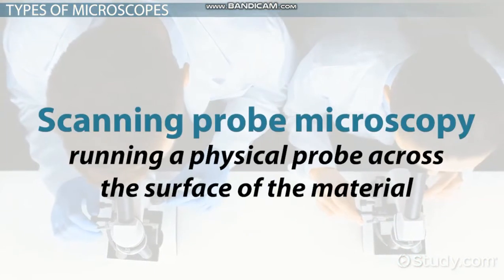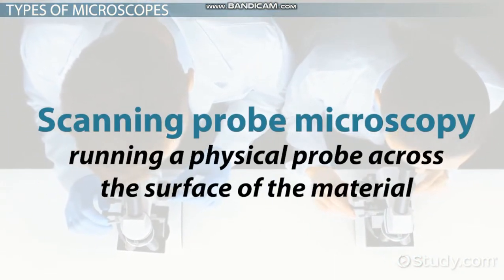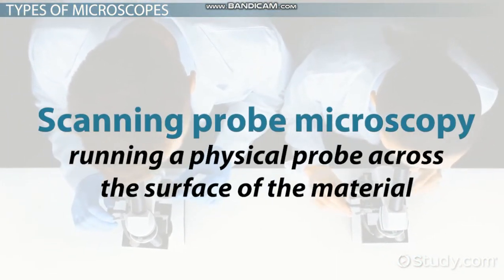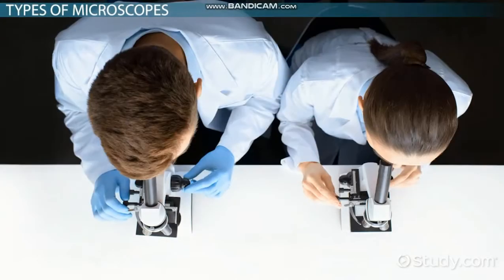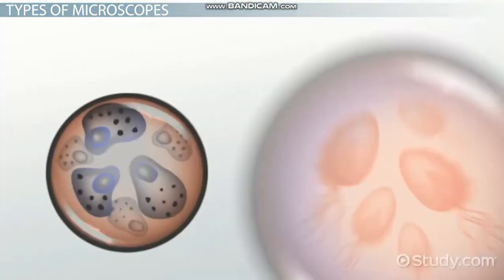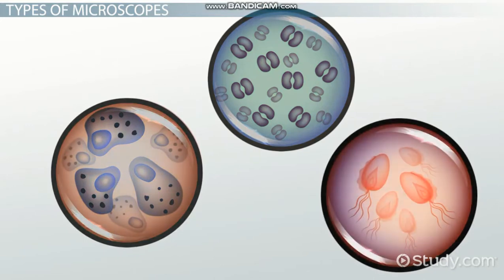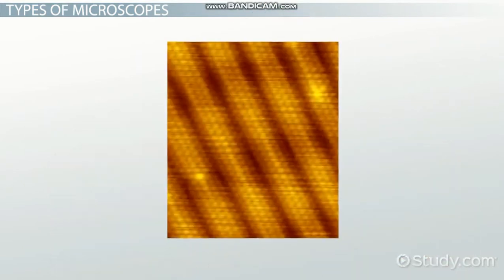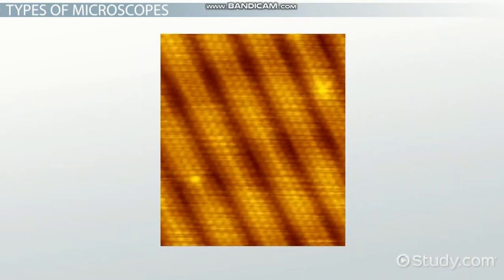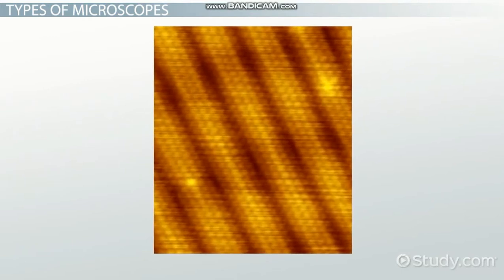Scanning probe microscopy involves running a physical probe across the surface of the material. It's the equivalent of a blind person feeling their way around an object. The probe has a very sharp apex that determines how high resolution can be produced. To create images of the atom, the apex must be the size of a single atom itself.